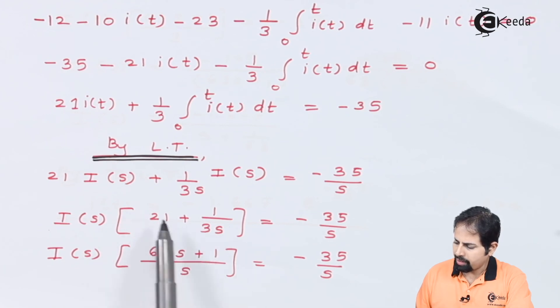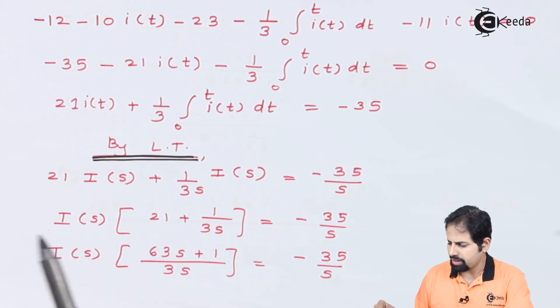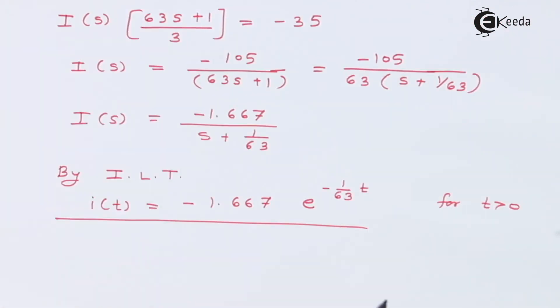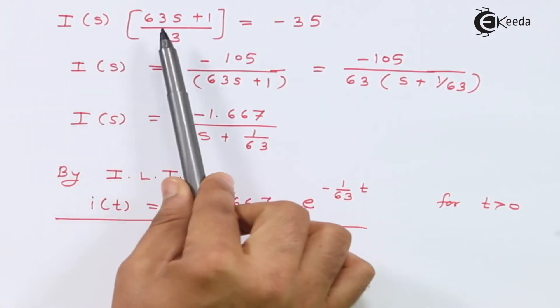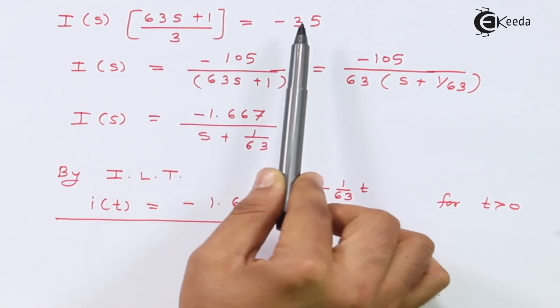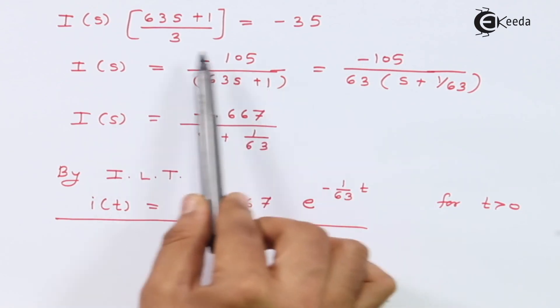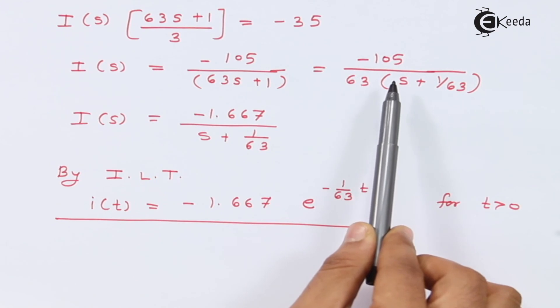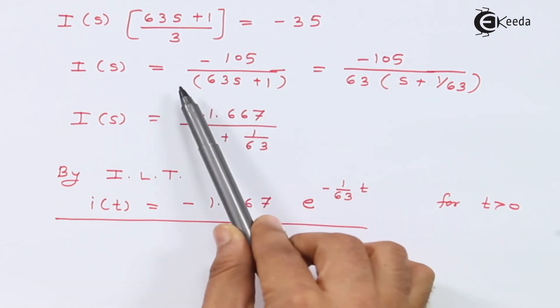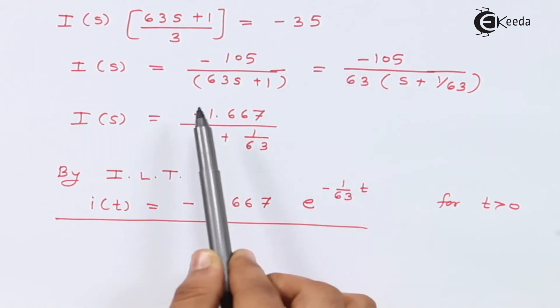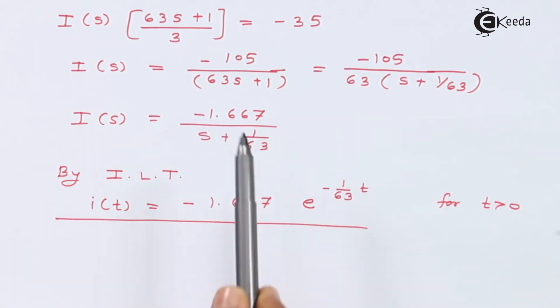So again if I rearrange this, if I take I(s) common, I will get 21 plus 1 upon 3s equal to minus 35 divided by s. And then if I cross multiply, I will get 63 into s plus 1 upon 3s. So this s and s will get canceled. And so if I again rearrange the terms, I shall get I(s) equal to this: 63 into s plus 1 divided by 3 equal to minus 35. So this is the final answer that I will get after solving it. What I have done is I have made the coefficient of this s as 1. So 63 is common. So 105 divided by 63 is, with this minus sign, minus 1.667. And here comes 1 by 63.